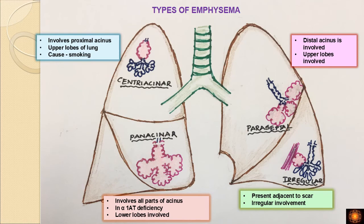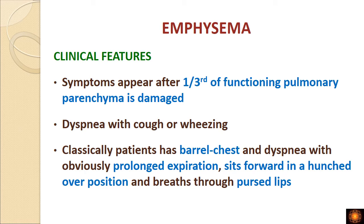Regarding clinical features: patients do not present in the initial stages. Symptoms appear only after one-third of the functioning lung parenchyma is damaged. After that, dyspnea and cough appear. The patient presents with dyspnea, cough, and wheezing. A very classical presentation is barrel chest with dyspnea and prolonged expiration.